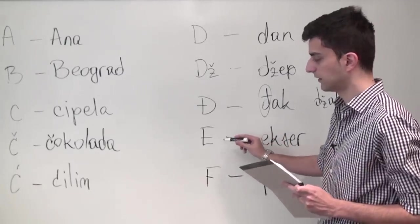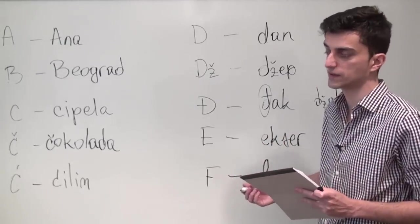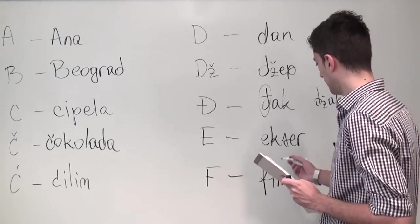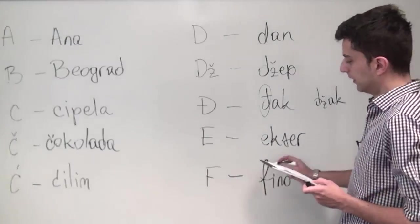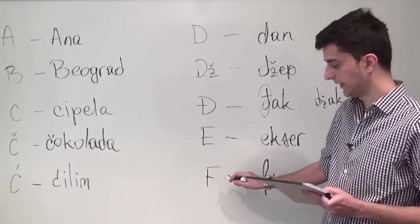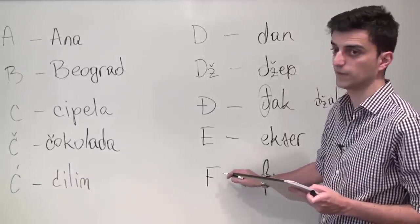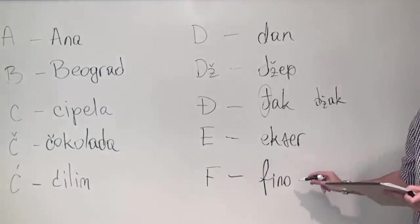So that's something to pay attention to. The next letter is the letter E in English, or as it is pronounced in BCS, E, and it can be heard in the word ekser meaning nail. Then there is F, which is very similar to the one in English, that is pronounced F, and you can hear it in the word fino which means nice.